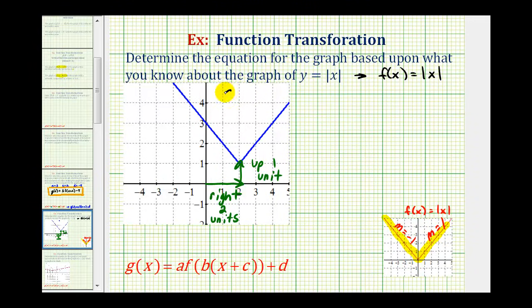So if we call this blue graph function g of x, we know g of x is a transformation of f of x, our basic absolute value function, which means we can write g of x in this form here, where the values of a, b, c, and d transform f of x.